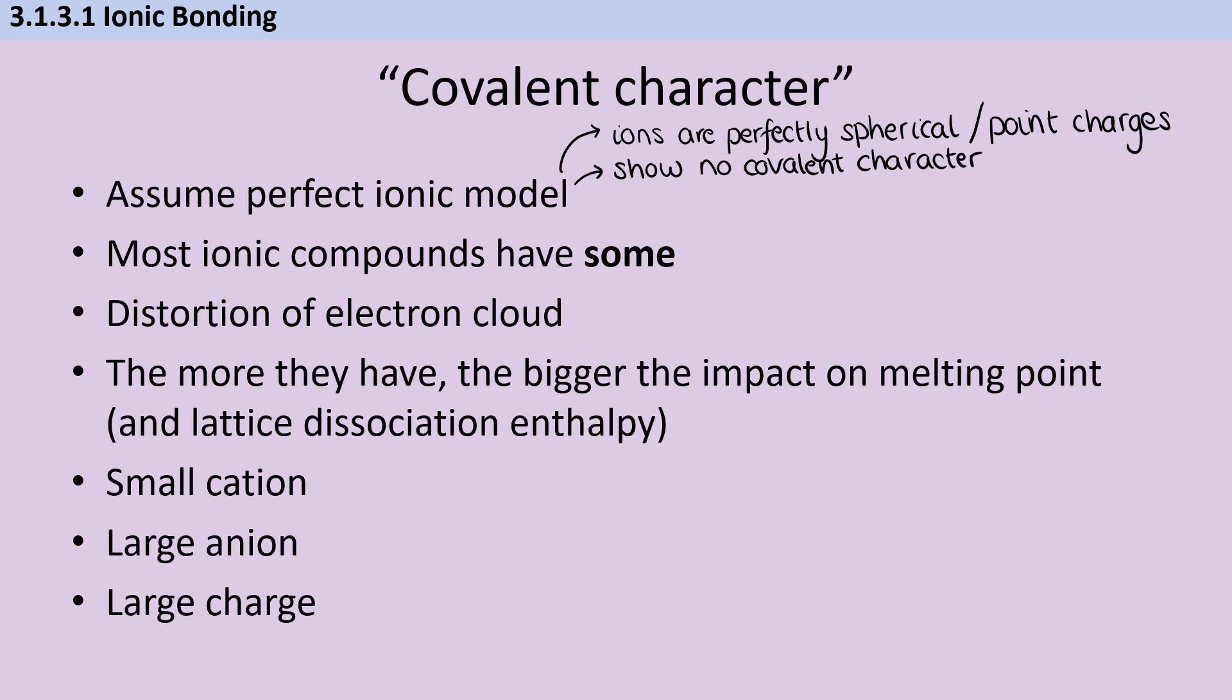Now, at GCSE, you focused on ionic compounds made from elements in group 1 and 2 and 6 and 7. And these are less likely to have some covalent character than things from, say, group 3. So aluminum oxide is kind of one of the poster girls for an ionic compound that has some covalent character. So what is that covalent character? Well, basically, it's distortion of the electron cloud around the ions. So rather than having these perfectly spherical ions, we see the electrons around the negatively charged ion being drawn back towards the cation. Now, the more covalent character that an ionic compound has, the bigger the impact will be on both its melting point and its lattice dissociation enthalpy.